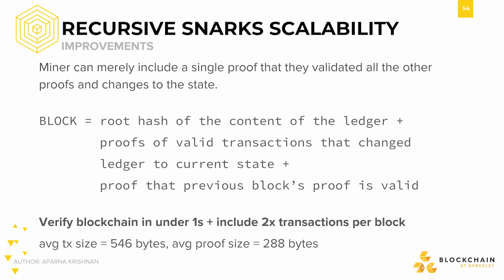It gets better — we can introduce a recursive structure. A miner can include a single proof that they validated all the other proofs and changes to the state of the network and everyone's balances. Instead of having transactions inside blocks, our new blockchain construction would have just the following components: one, the root hash of the content of the ledger; two, proofs for all valid transactions that have changed the ledger to the current state; and three, proof that the previous block's proof was valid. All in all, this would allow anyone in the world to verify the blockchain in under one second, and it also allows for twice as many transactions per block.